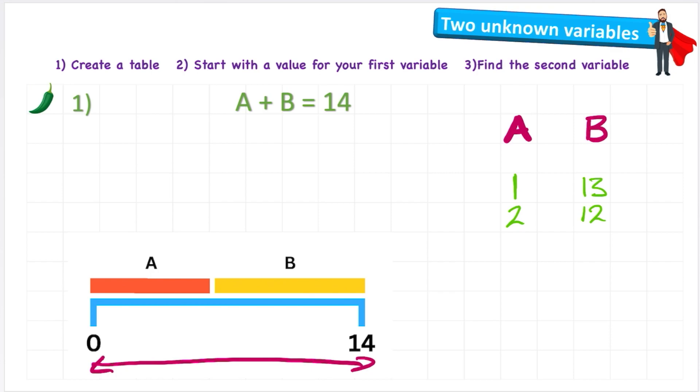And I can do this the other way around as well by starting with B. So let's say I think B is 11 and now I want to find out what A is. I can again use the inverse, but this time I'm going to say 14 - B will equal A, and we know the value of B because we've made it up as 11. So 14 - 11 = A. 14 - 11 = 3. So A in this case would be 3.